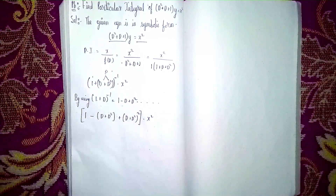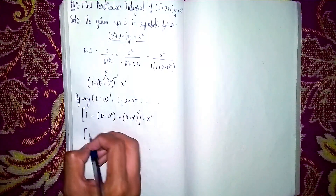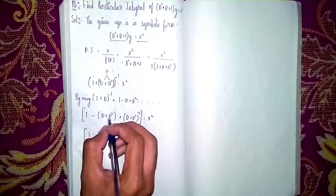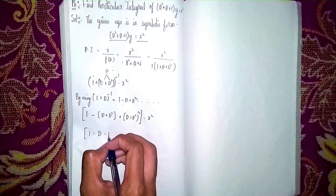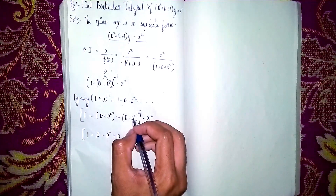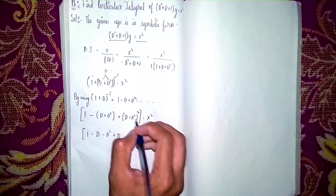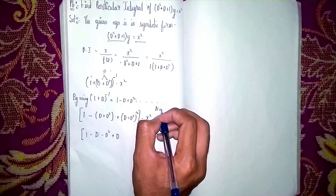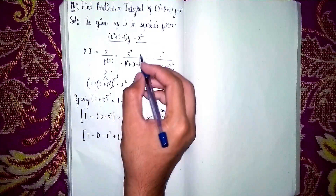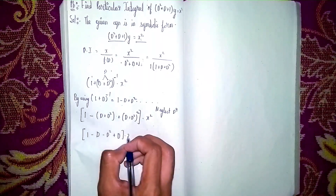Now open the brackets: 1 minus D, then minus D², then plus D², and D⁴ we are neglecting. We neglect higher-order terms because the RHS is x², a second-degree polynomial, so terms of D³ and above become zero when applied to x².